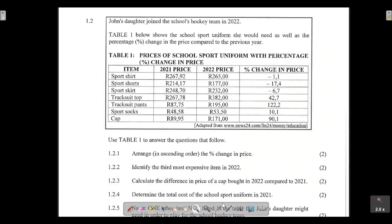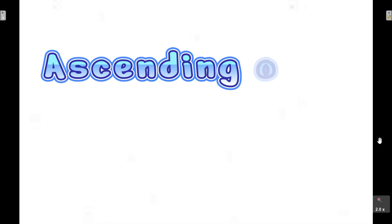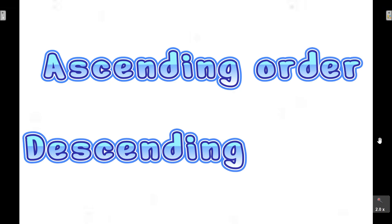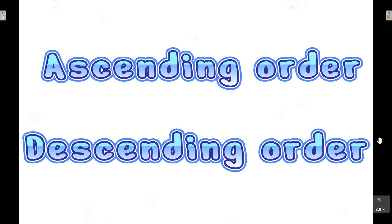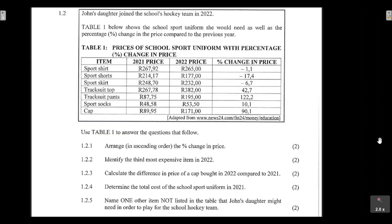This question is nice and easy. It's just us analyzing and interpreting a table that is given to us. It requires you to understand the meaning of ascending order and the meaning of descending order — knowing the difference between the two.